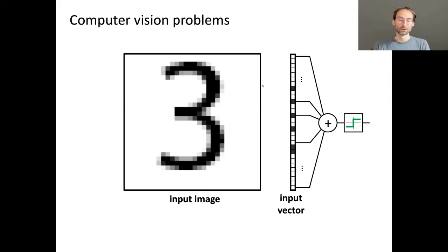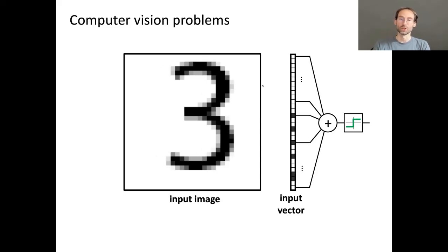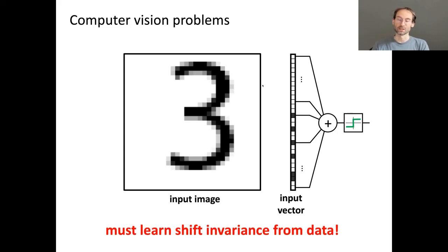Here's an example: probably the simplest problem in computer vision, digit classification. We see an image of digit three. We can just stack it into a vector of pixels and feed it into a neural network. The problem is when we allow images to undergo transformations — even shifting by one pixel. Because the network is completely unaware of the geometry of the image, it will have a hard time learning that this is still the same digit three. Shift invariance has to be learned from data.